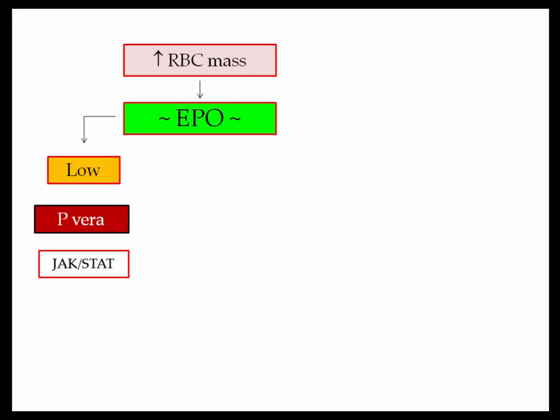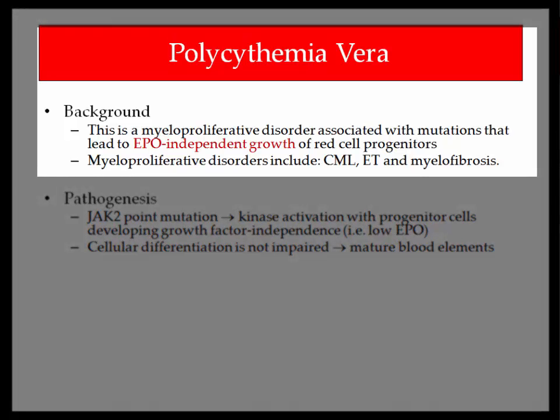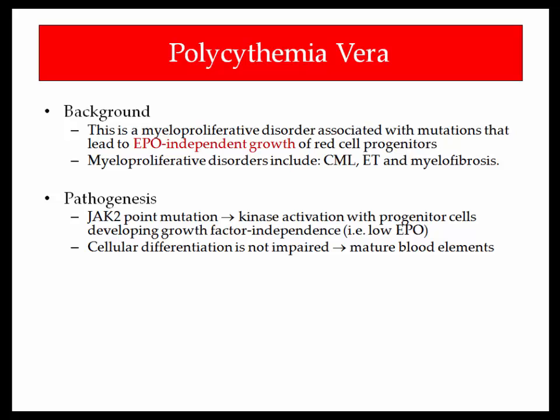Polycythemia vera is defined by high red blood cell mass and a low erythropoietin level. P.vera is a myeloproliferative disorder with mutations that lead to erythropoietin-independent growth of red cell progenitors. The other myeloproliferative disorders include CML, essential thrombocythemia, and myelofibrosis. The pathogenesis includes a point mutation of the cytoplasmic JAK2 tyrosine kinase protein, leading to constitutive activity of the progenitor cells.